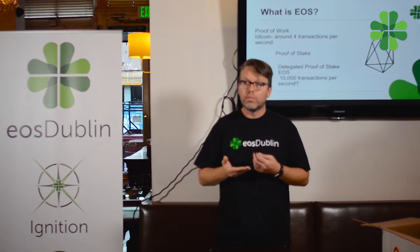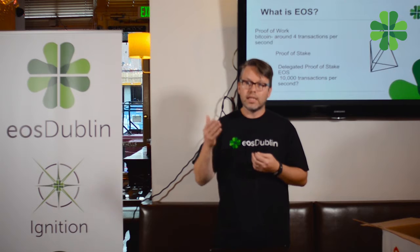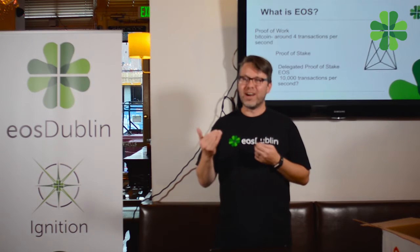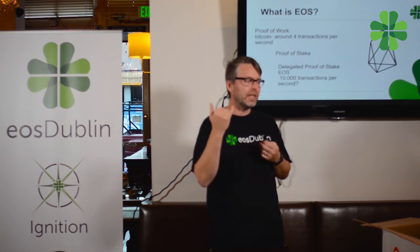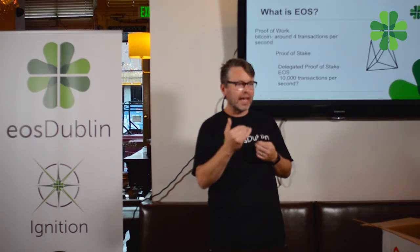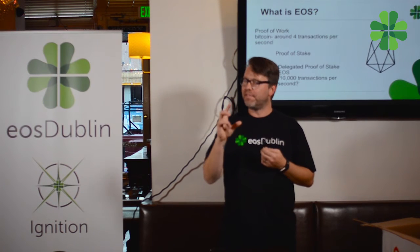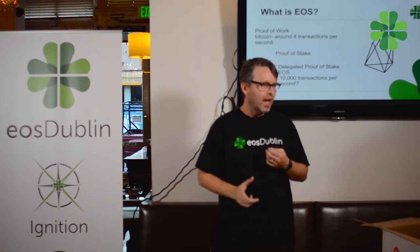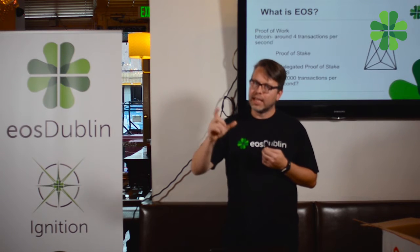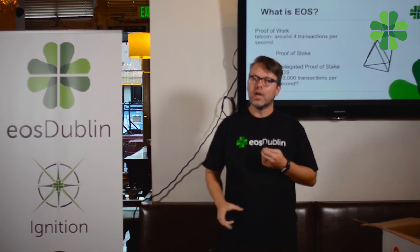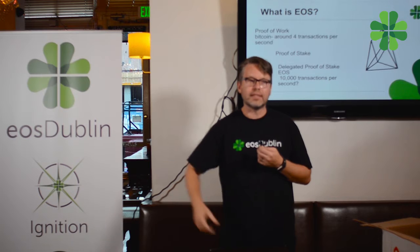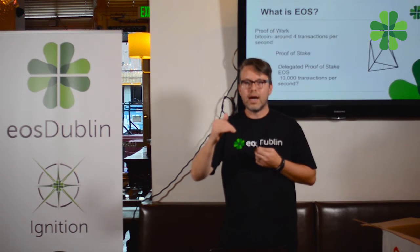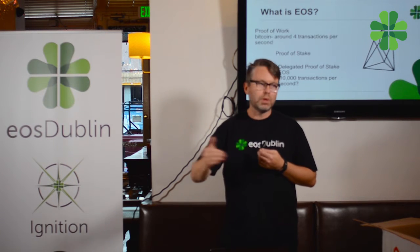EOS is the latest model — the lightest and fastest blockchain ever. Bitcoin averages about four or five transactions per second, whereas with EOS we have not found the limit. On August 8th, 2018, we were trying to push it to 8,888 transactions per second.